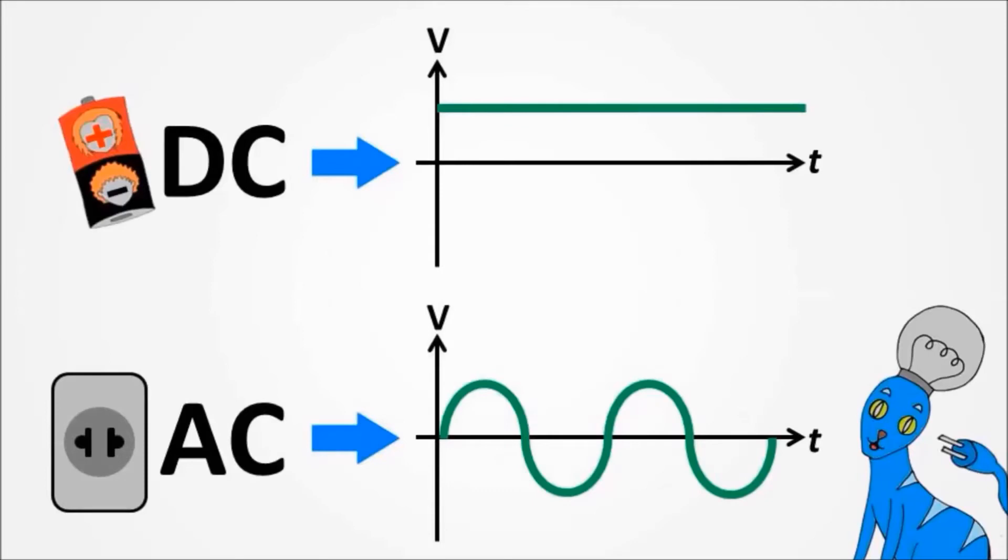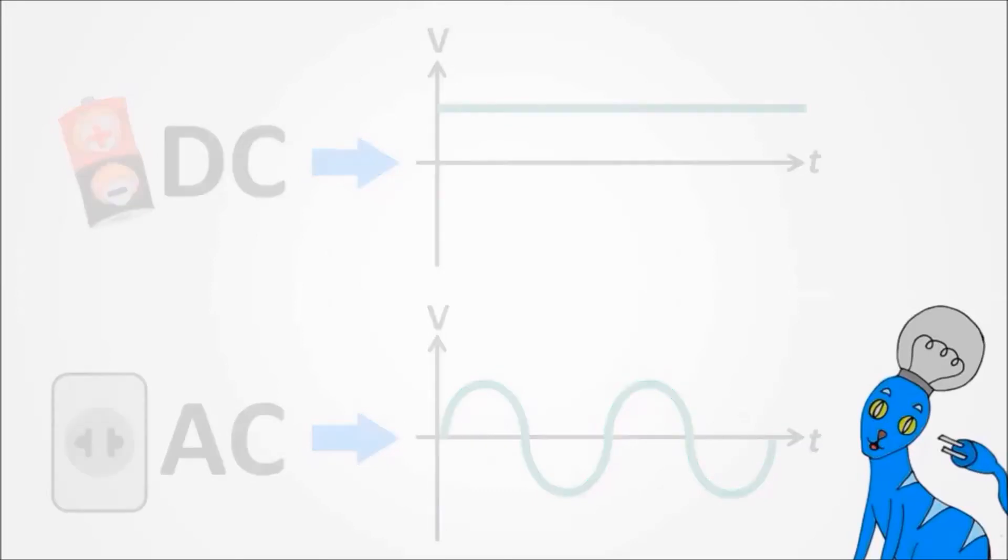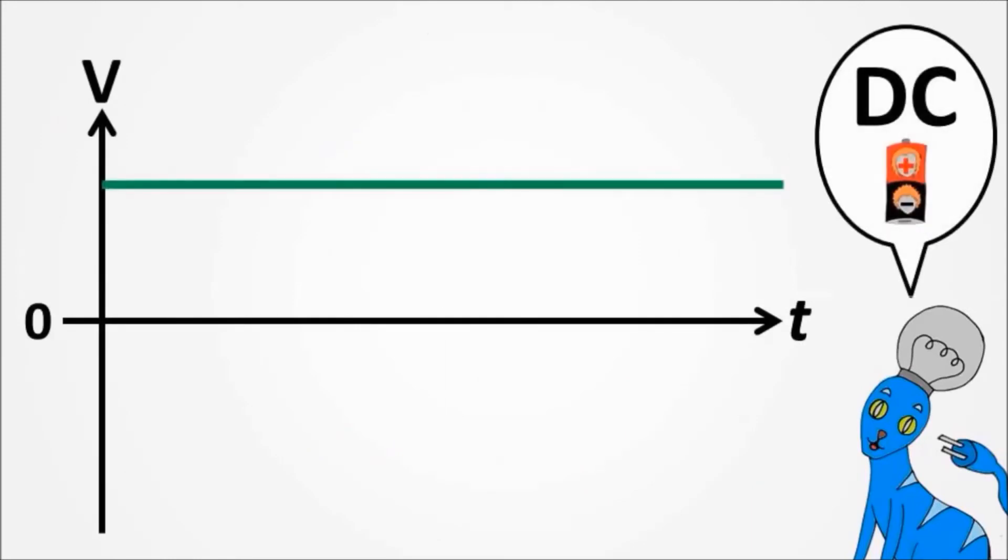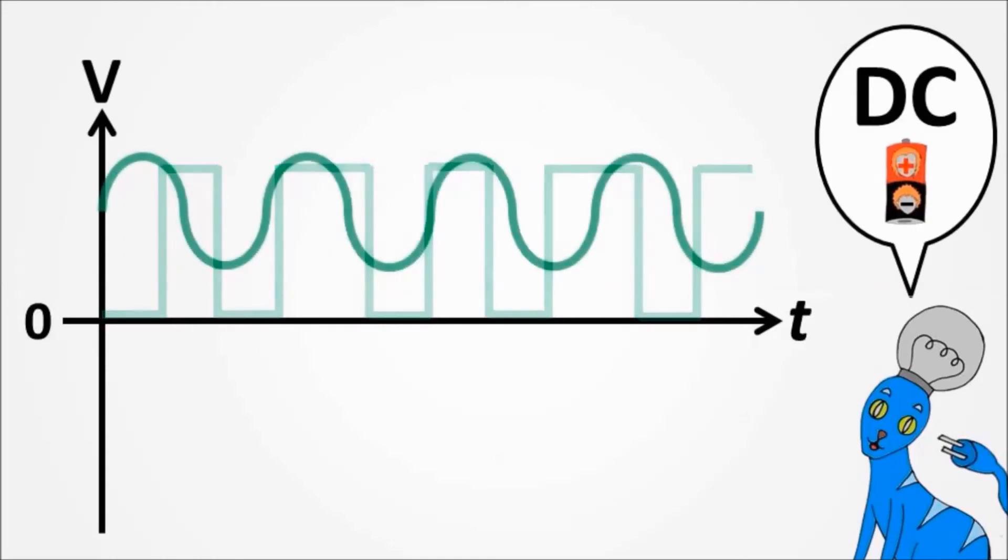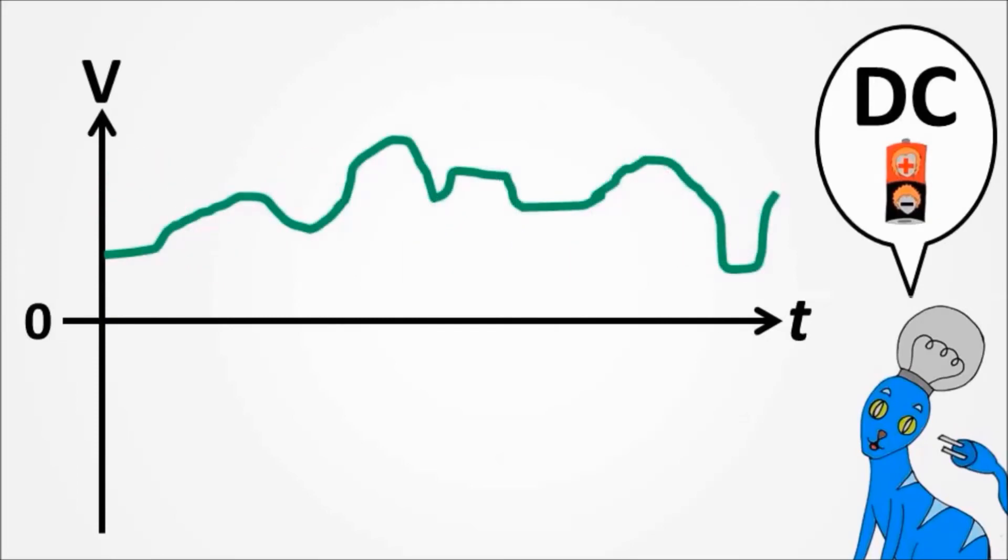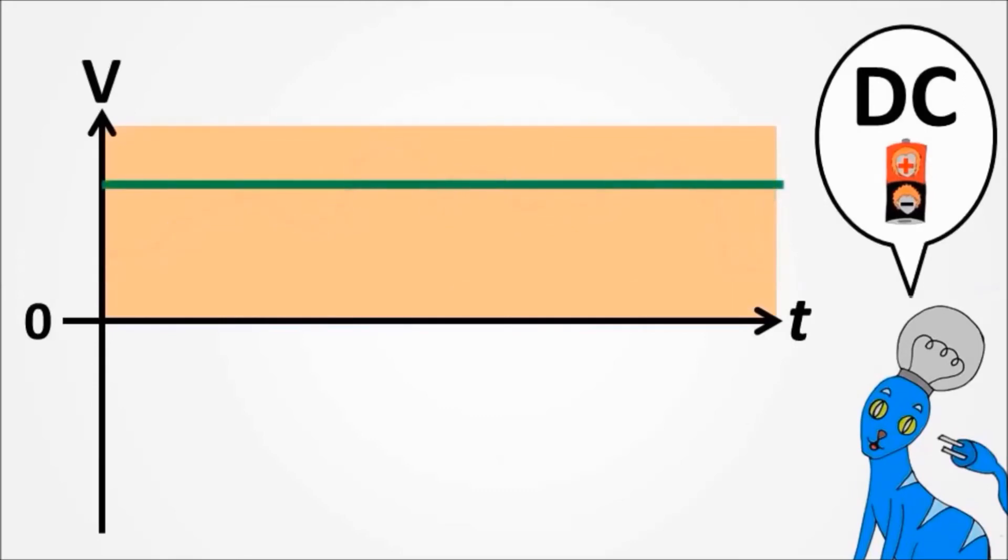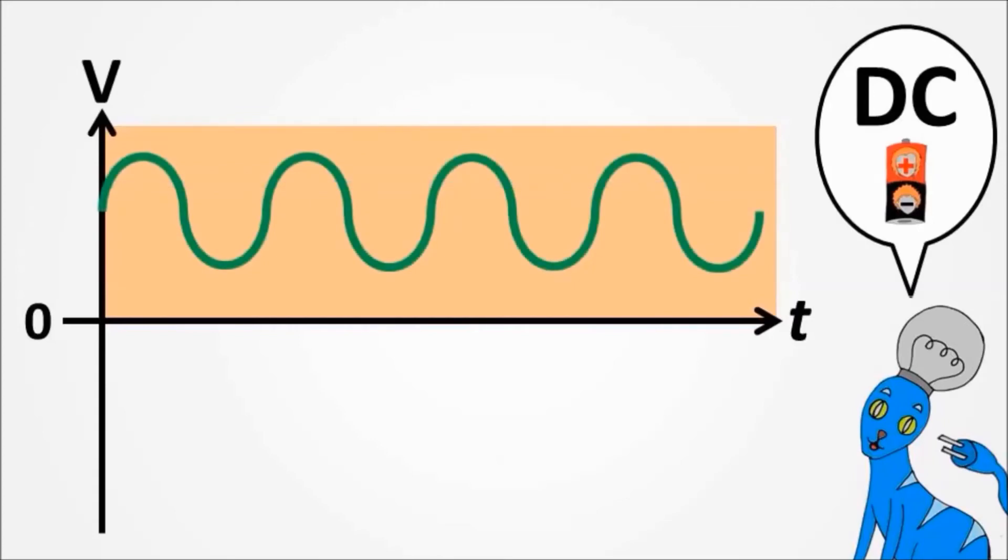But we can have many of them. A straight line like this will always be representing a DC energy. And this one is also a DC one. And this is also DC. Here, one more DC energy. Observe that they will never cross the voltage zero line. That's why they are all DC.